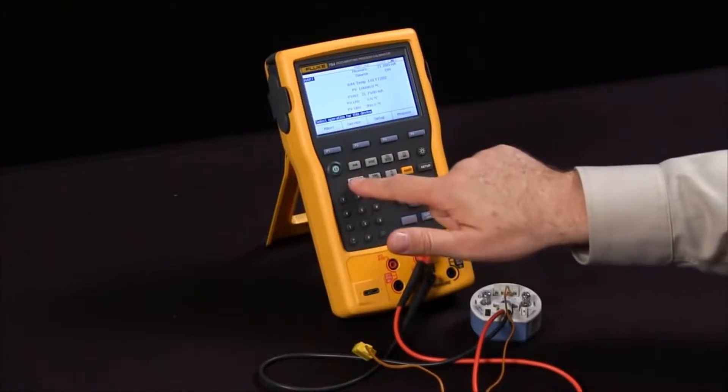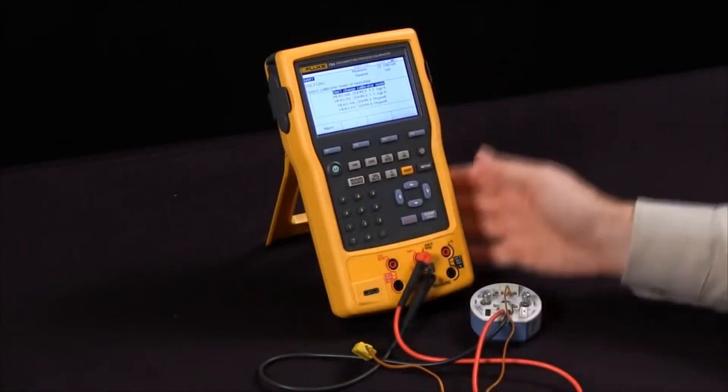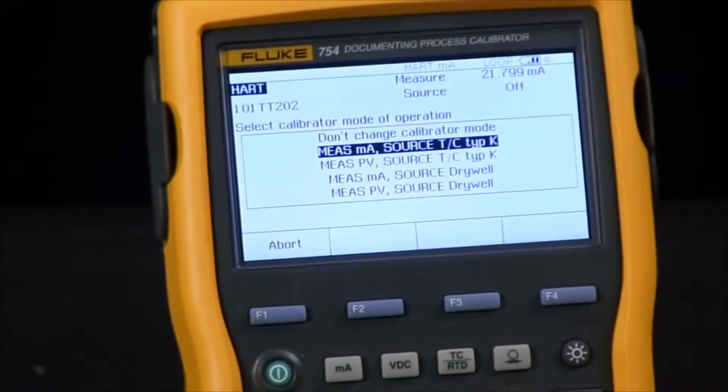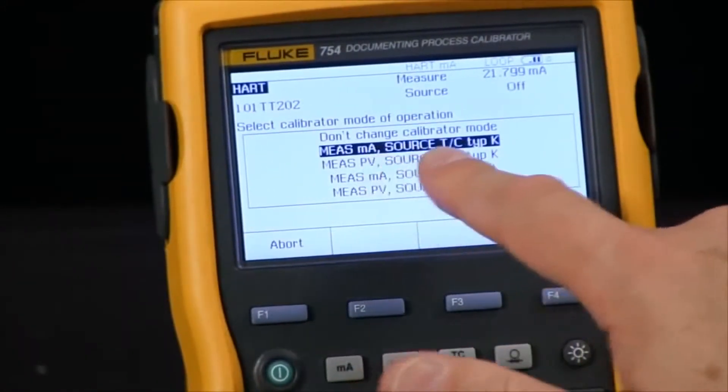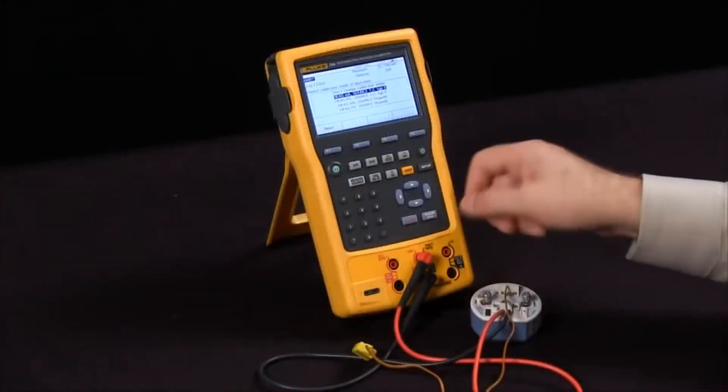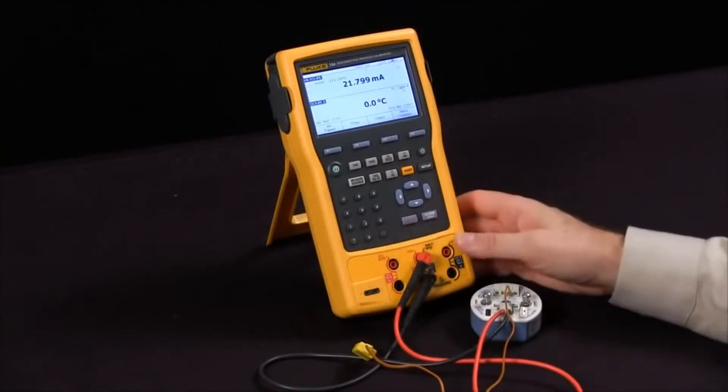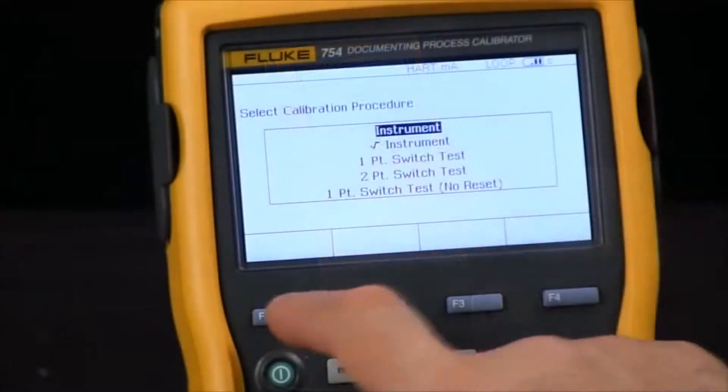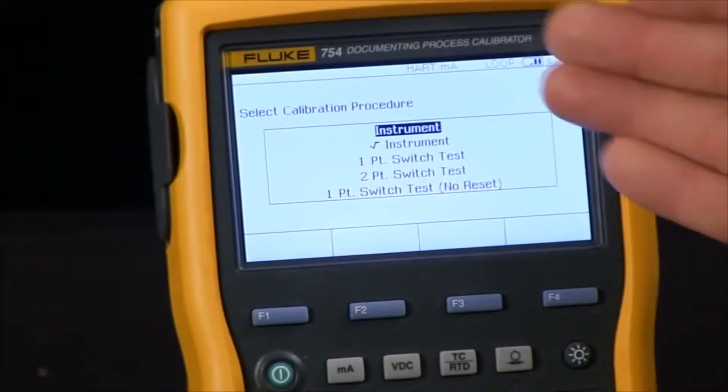I will simply hit the measure and source key letting the calibrator know what I want it to do. So I will shift down to measure milliamp and I'm going to source to a thermocouple type K. We're going to enter that and we will do an as found.